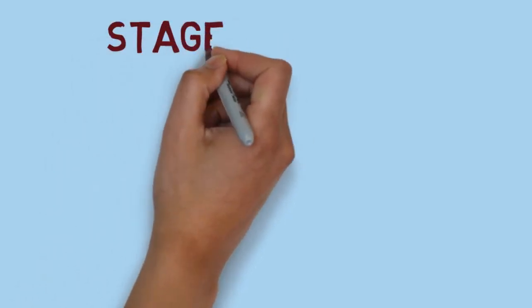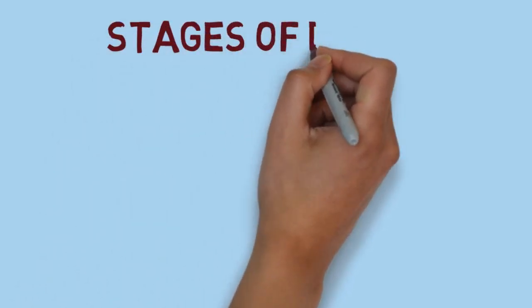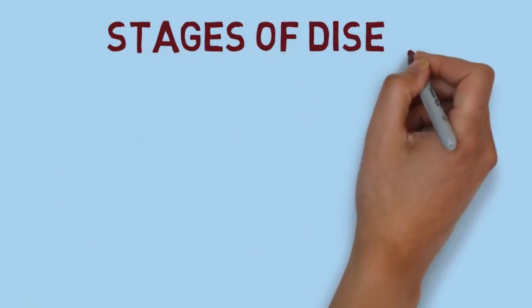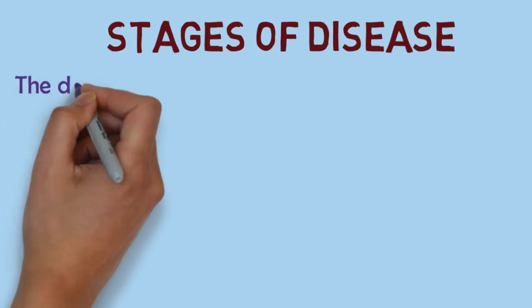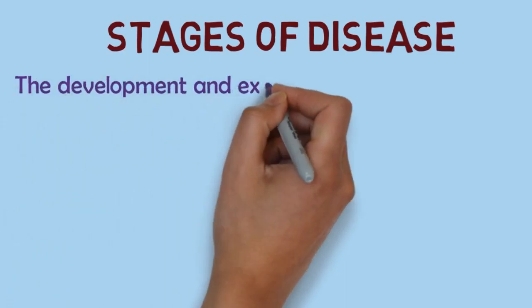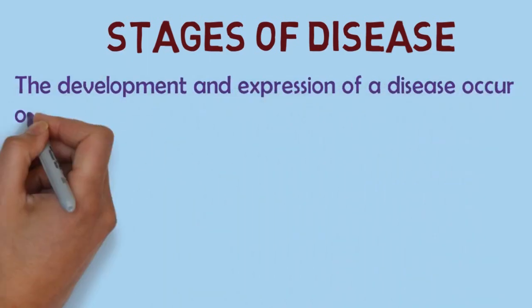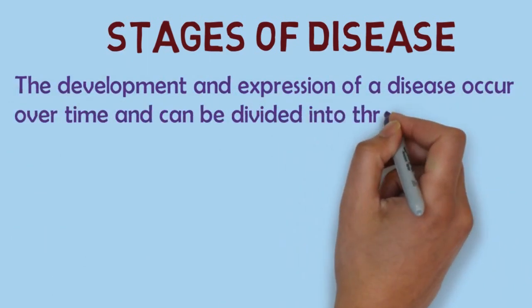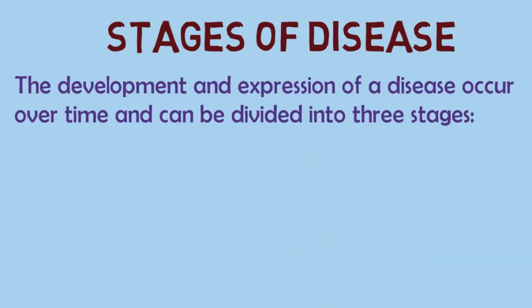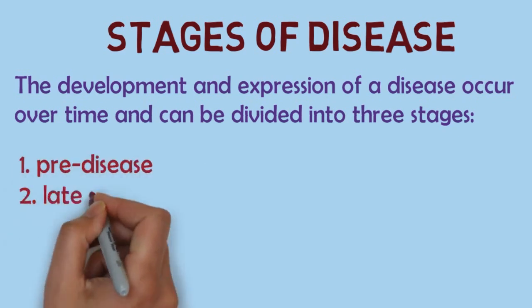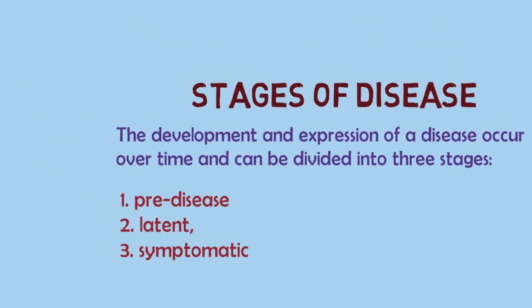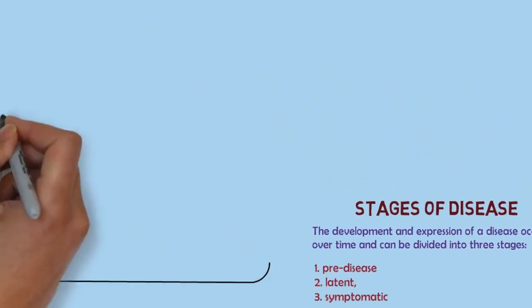Hello and welcome to this video where we will be talking about stages of disease. The development and expression of a disease occur over time and can be divided into three stages: pre-disease, latent, and symptomatic stages.